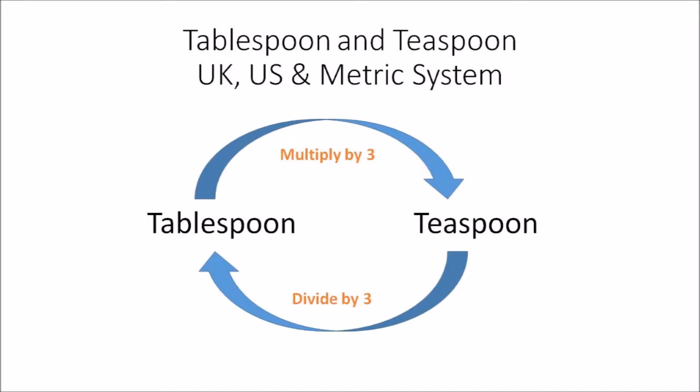If you need to convert tablespoons to teaspoons using the UK, US, and metric system, you multiply by three. If you need to convert teaspoons to tablespoons, you divide by three.